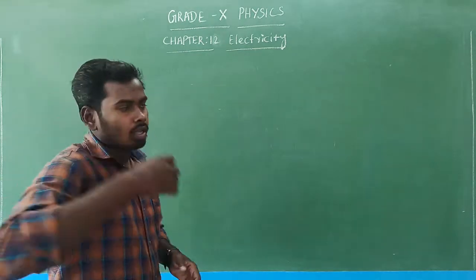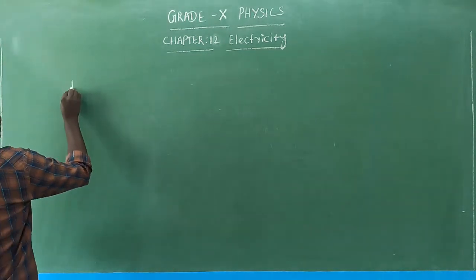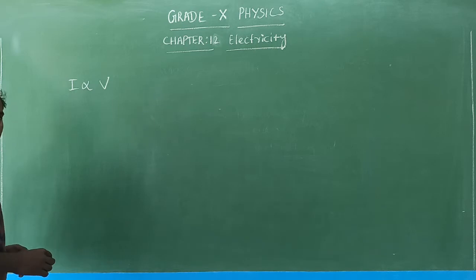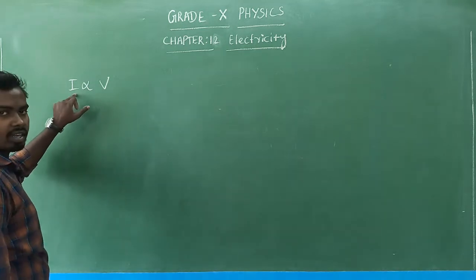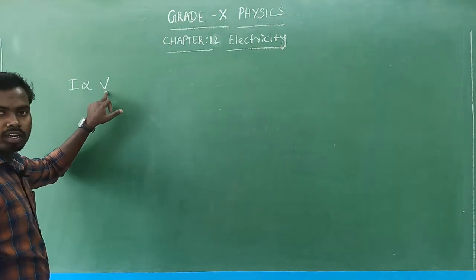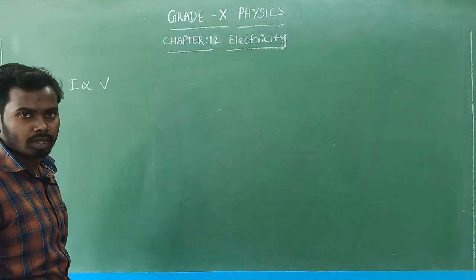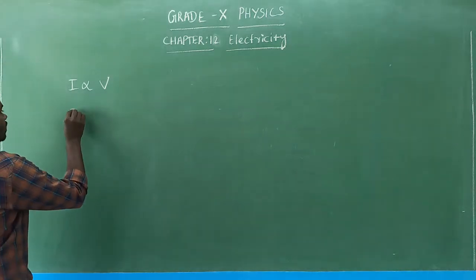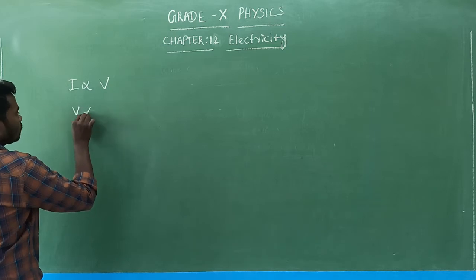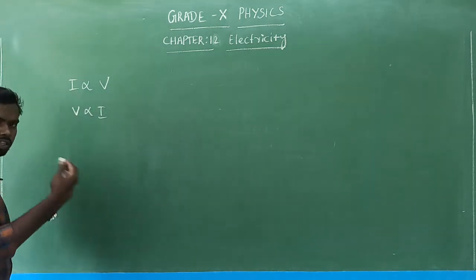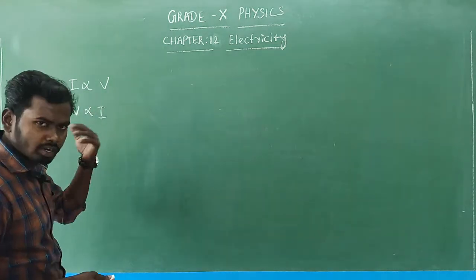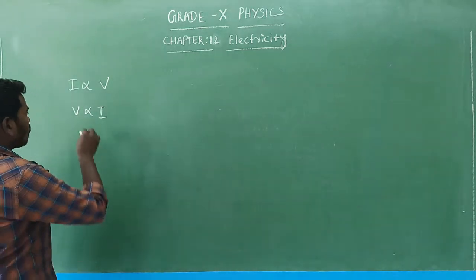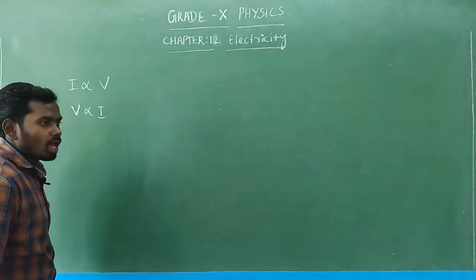Generally, we write I which is directly proportional to V, which means current flowing through a conductor is directly proportional to potential difference across the two terminals of the conductor. We can also write V is directly proportional to I — both are the same, just the terms are interchanged.